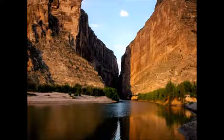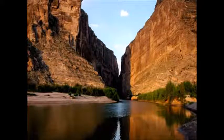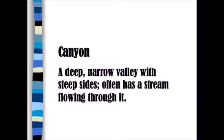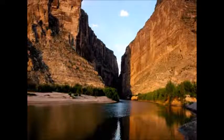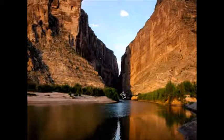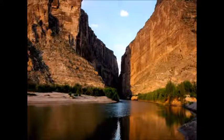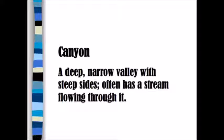Up first, we have this image. Do you know what it is? If you said a canyon, you're correct. A canyon has a deep, narrow valley — notice how close these two are together — with steep sides and a small stream flowing through it. Here's the definition for you, and feel free to pause the video if you need to.